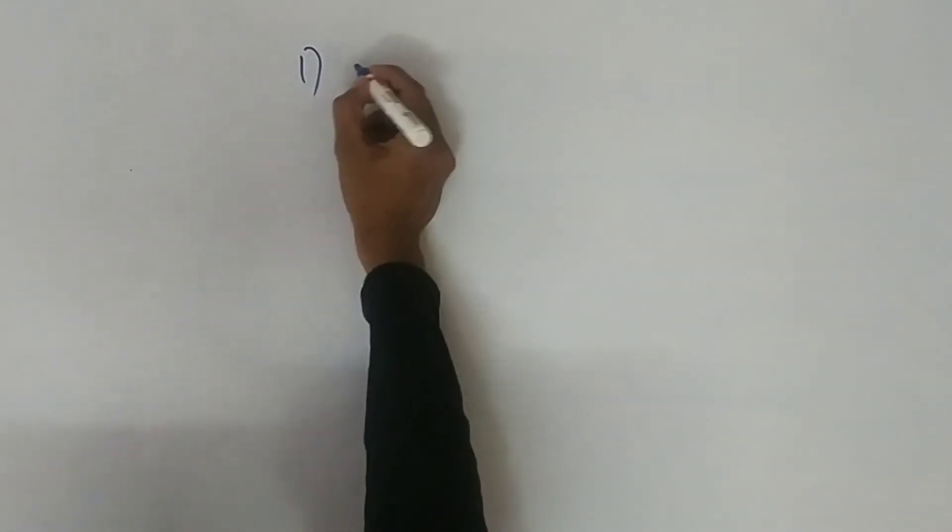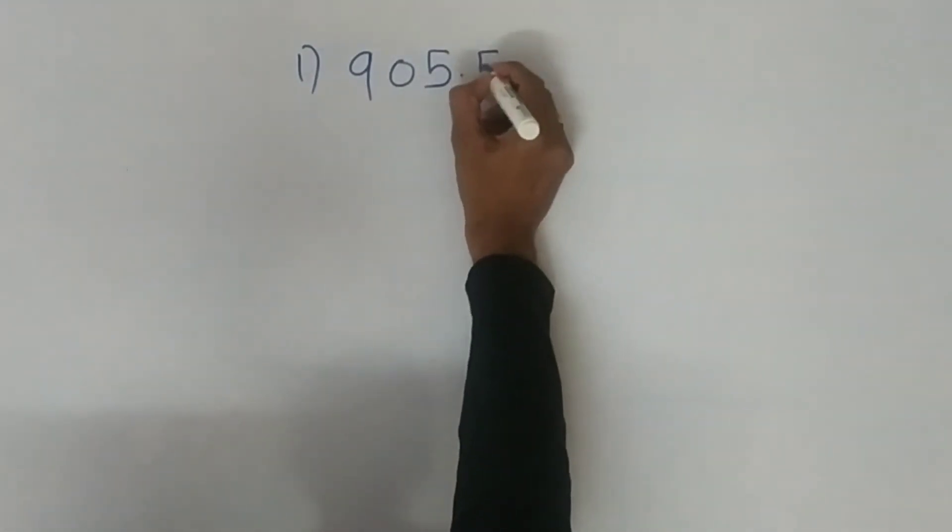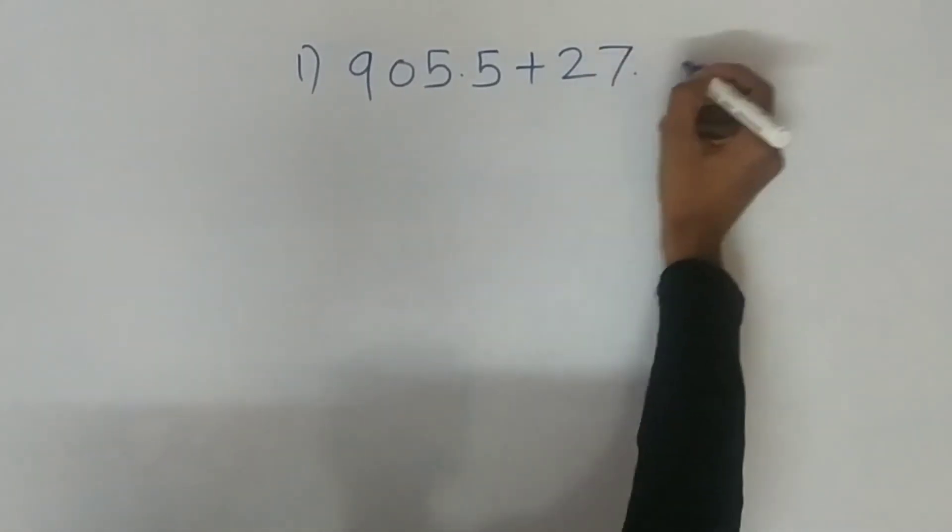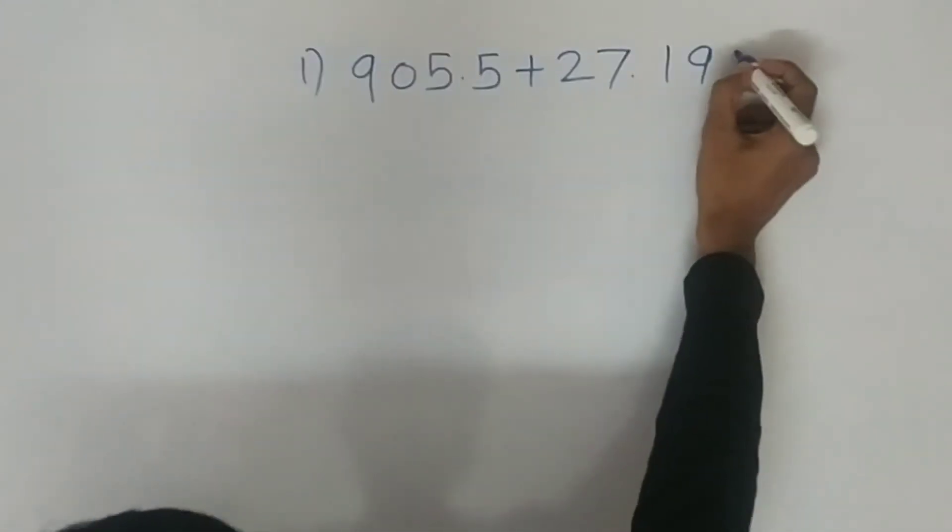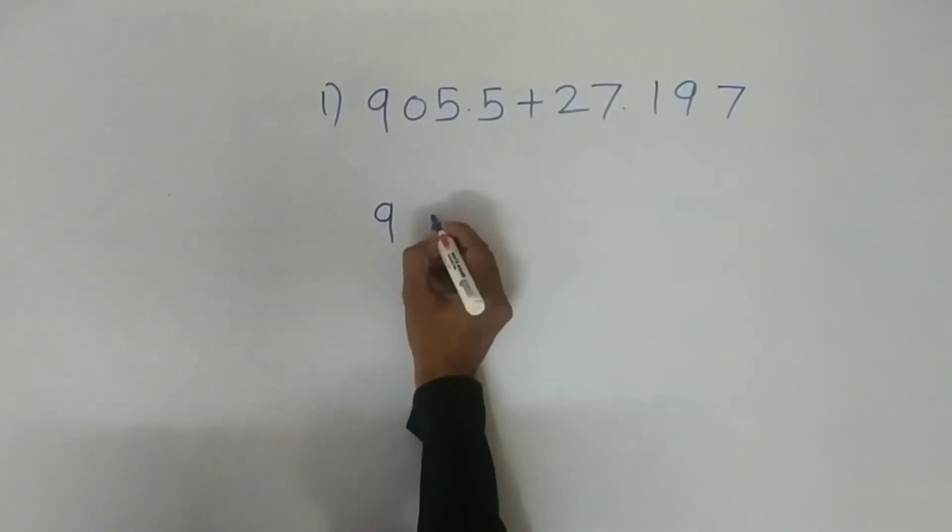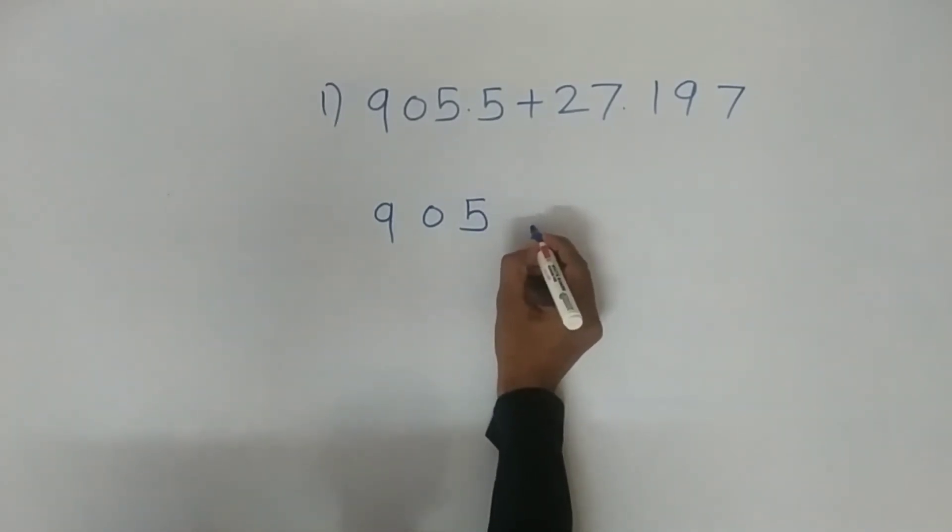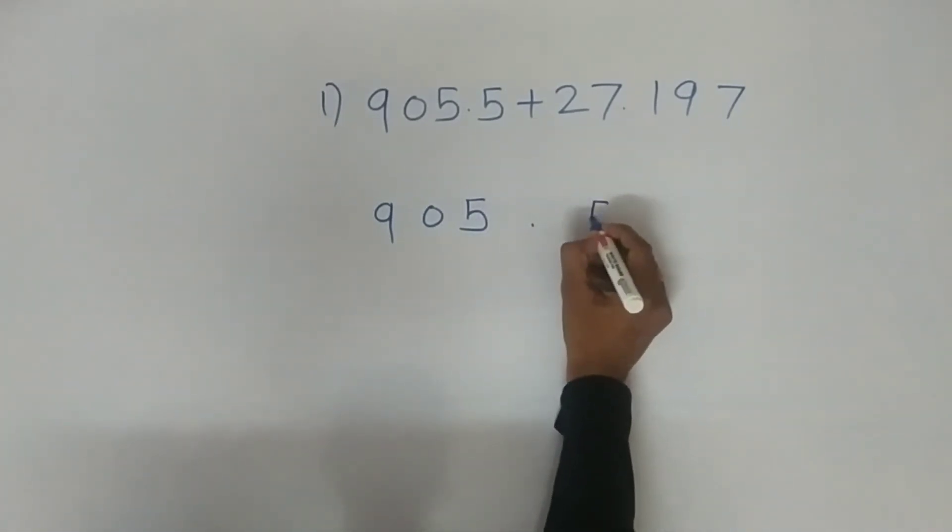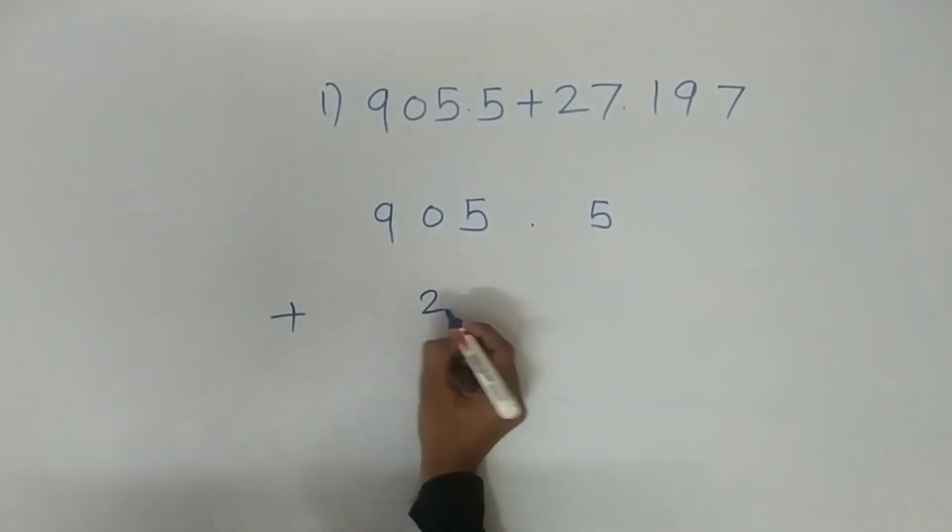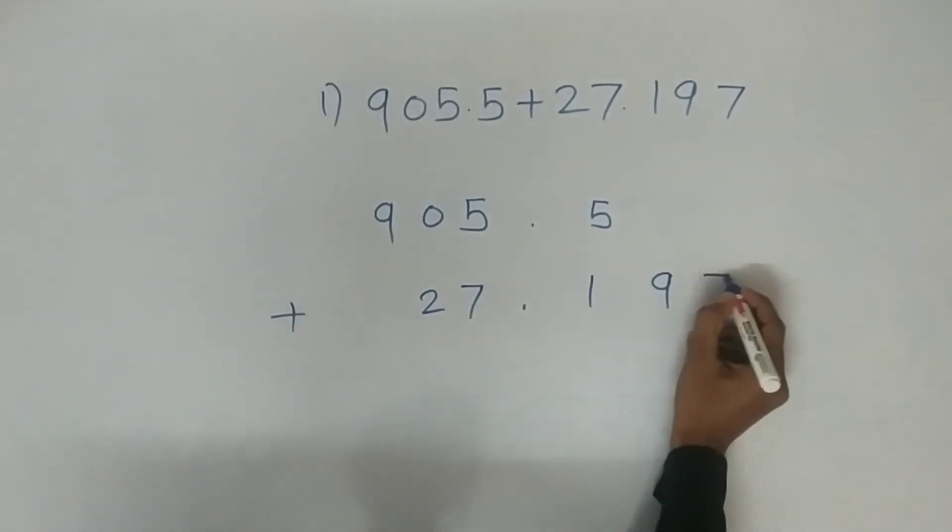First example: nine hundred and five point five plus twenty seven point one nine seven. So we shall add both numbers: 905.5 plus 27.197.